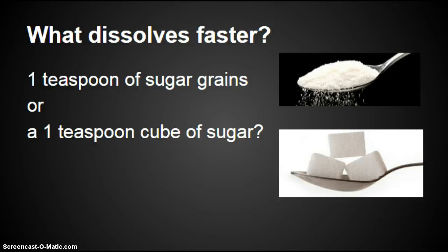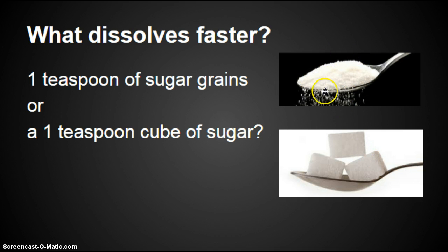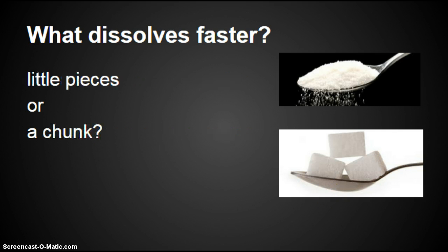Which dissolves faster: one teaspoon of sugar grains or one teaspoon of sugar cubes? These are equal amounts — if we smashed up the cubes, they would equal the pile of grains. I'm not asking one grain versus one big cube; I'm asking the same total amount, one in cube form and one in granule form. So, little pieces or a chunk — which one's going to dissolve faster?